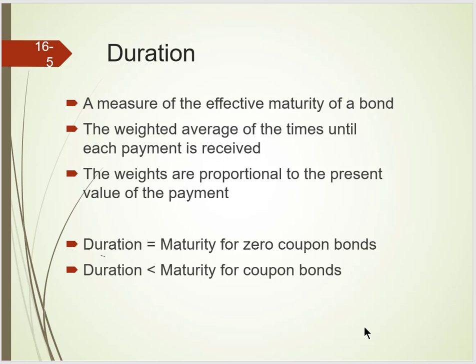Duration is equal to the maturity for a zero-coupon bond. If you have a zero-coupon bond with 20 years to maturity, the duration is 20 years — because the present value of the price at 20 years gives it its current value, and there's no interest to speed up the payback. The duration of a coupon bond is always going to be less than the maturity of the bond, so the duration of a 20-year coupon bond must be less than 20 years.